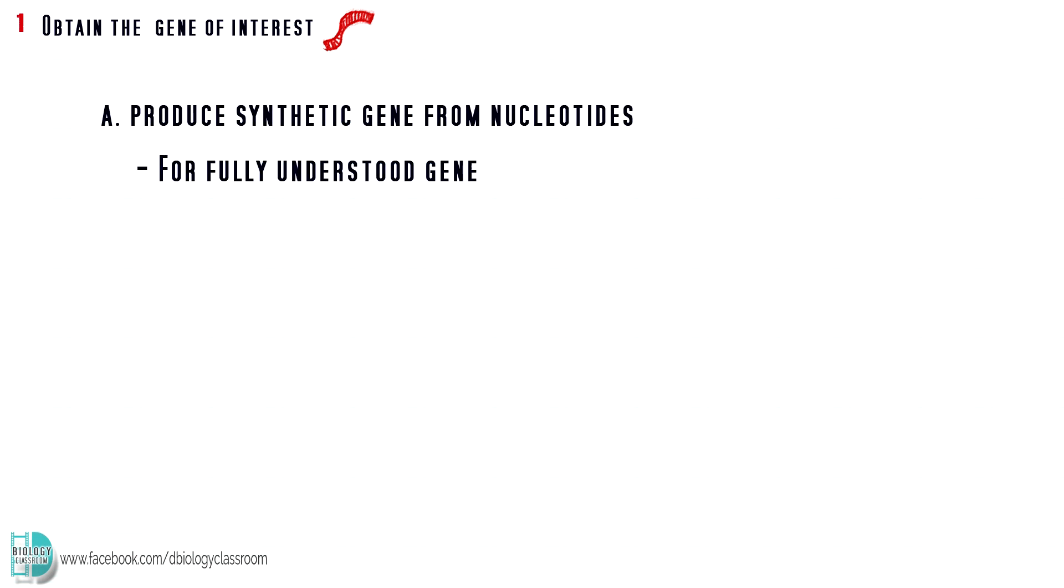There are a few ways to obtain the gene of interest. If a gene is fully understood, scientists can sometimes produce synthetic gene from nucleotides by referring to a DNA dictionary.